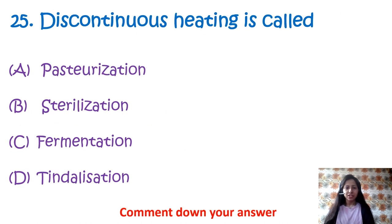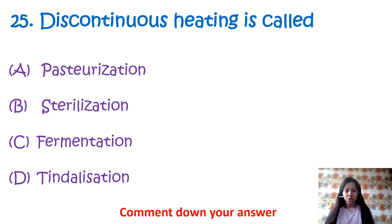Question 25: Discontinuous heating is called — option A: pasteurization, option B: sterilization, option C: fermentation, option D: tyndallization. Please comment down the answer to this question.